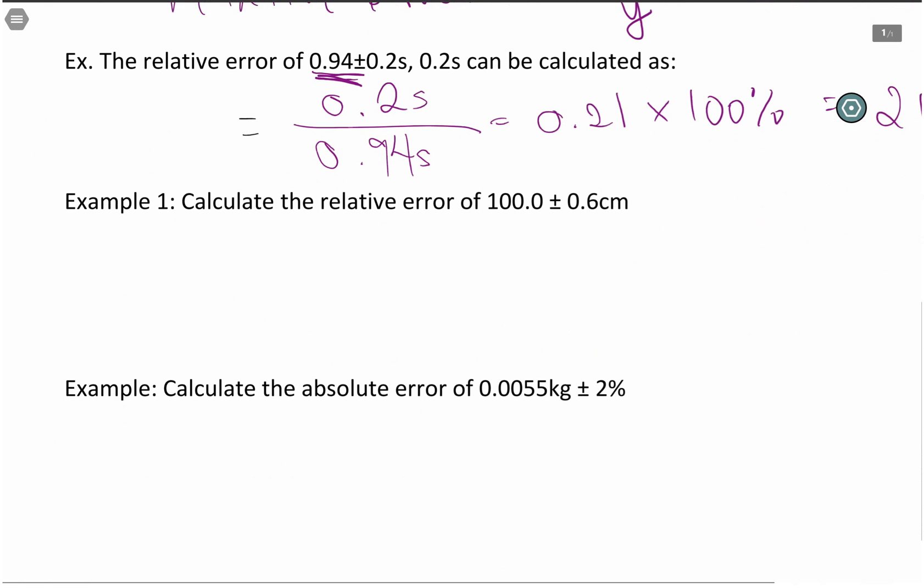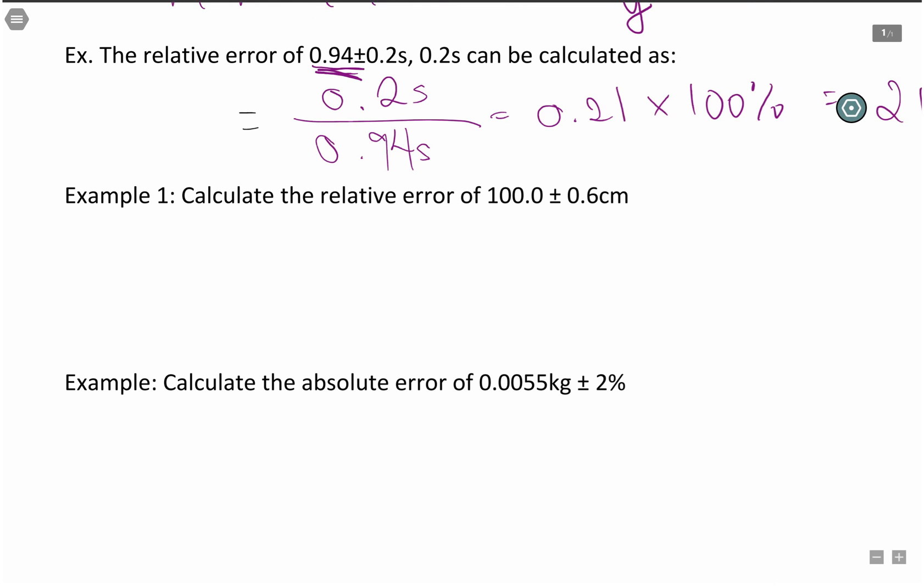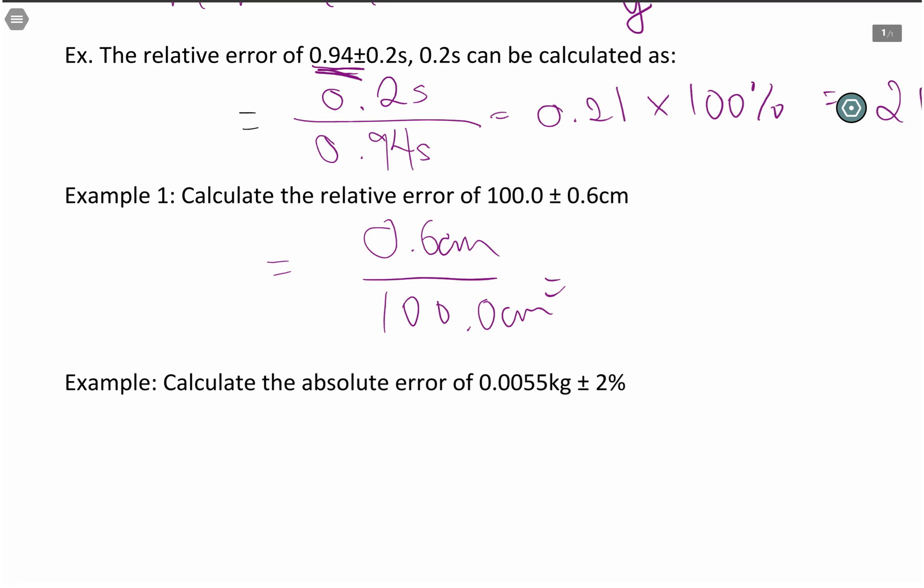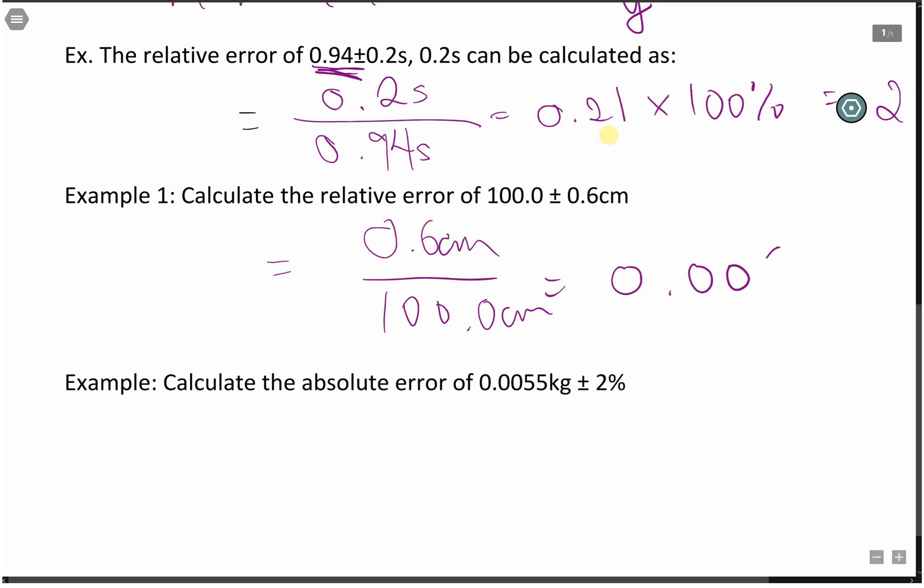Let's take a look at a few examples. Calculate the relative error of 100.0 ± 0.6 centimeters. So our relative error, this is going to be 0.6 centimeters divided by our 100 centimeters. And this should give you 0.006.